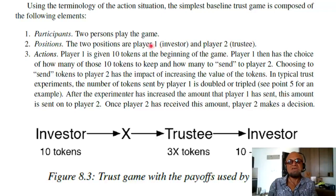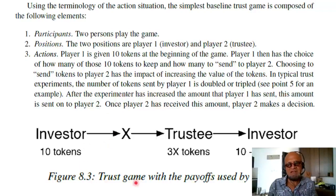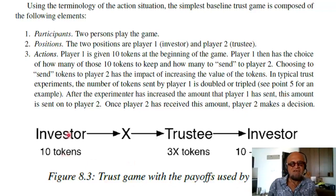The main idea is to see whether player one starts by being a selfish, egoist, rational player, or whether there is something more to human behavior. Trust game payoffs used by Berg et al. — the paper we mentioned — show that the investor has 10 tokens given to him or her.